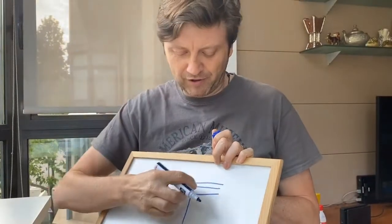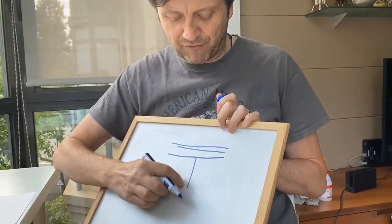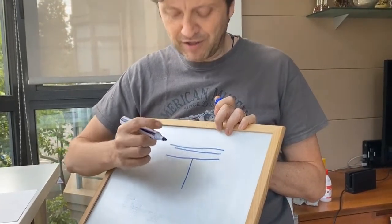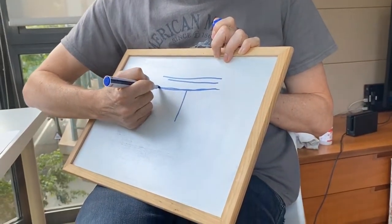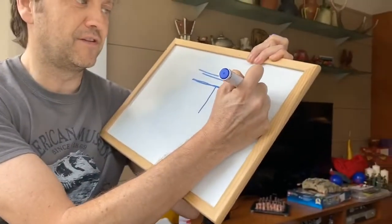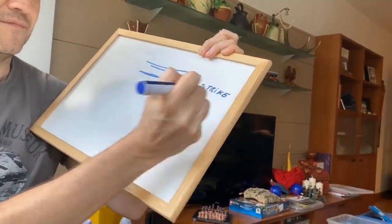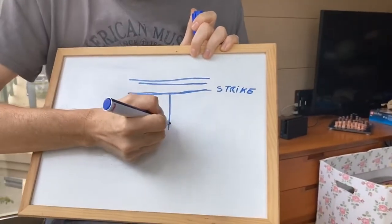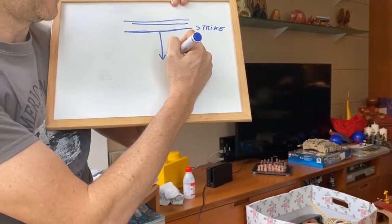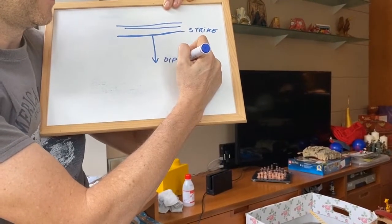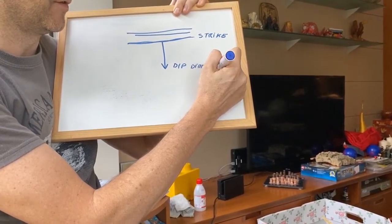If I drop one ball, this is the path that the ball will follow. The horizontal line, we call the strike. And the line of maximum inclination, we call the dip direction.